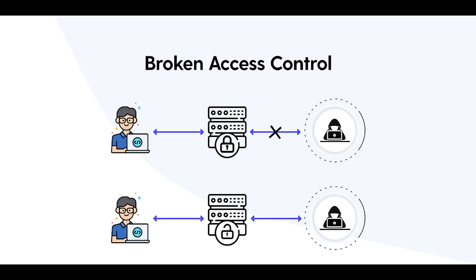There are three types of access controls: administrative, technical, and physical. The main focus for the CySA exam would be technical access controls. For effective access control, trusted server-side code or serverless API is critical to prevent modification.